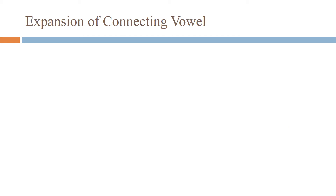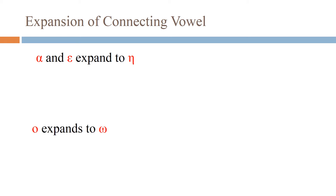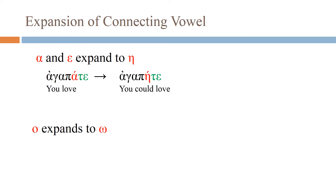The only difference between the indicative and the subjunctive in terms of form is that the connecting vowel in the subjunctive is expanded. The connecting vowels alpha and epsilon both expand to eta, and omicron expands to omega. So in the verb agapate ('you love'), the subjunctive only requires the expansion of that alpha to an eta — agapēte. The ending is the same; the only difference is the expansion of that vowel.